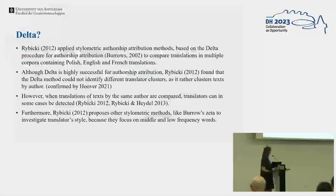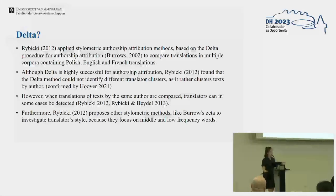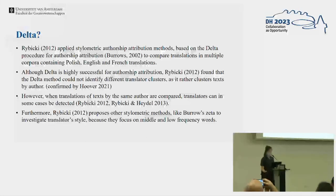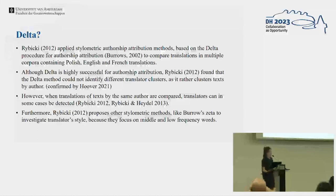Delta procedures aren't very good at finding translators, although they are very successful for authorship attribution, and we find that the author is nearly always the most important signal. Then maybe there are other factors that are also more important than the translator. In some cases the translator can be detected — for instance, when a translator uses very free translation. But Jan Riebitke also proposed other stylometric methods, like Boroseta and Zeta, to investigate the translator's style.